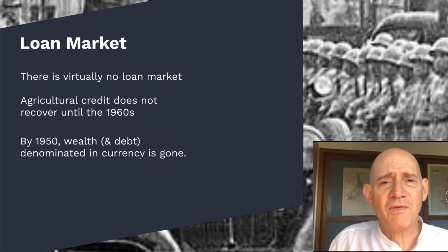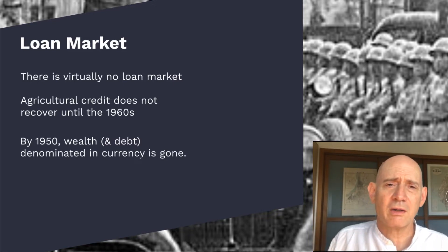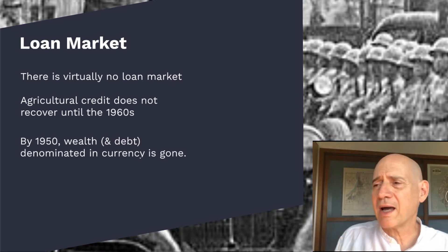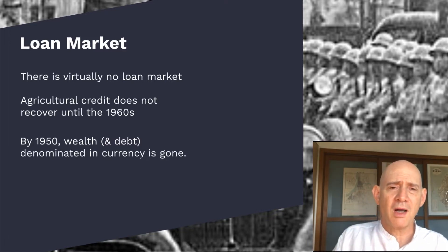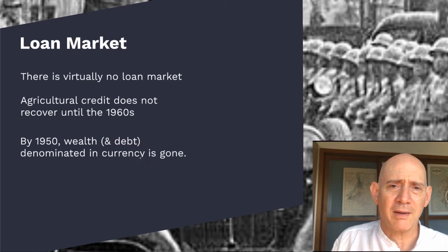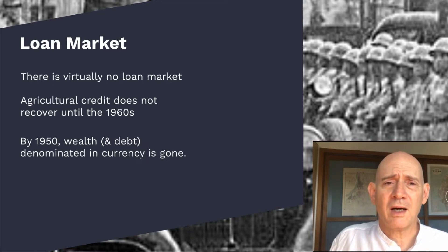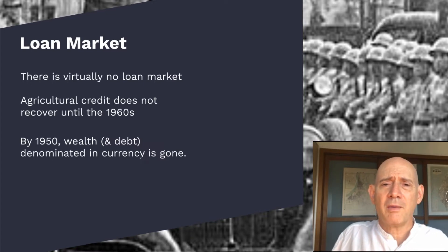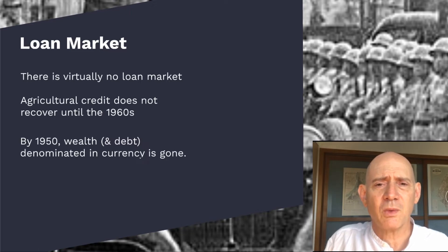When you do find agricultural credit, the interest rates are always off the chart. There's one category listing interest rates of 20% or 25% or more, and virtually all the loans are in that category. Usually there just aren't any loans at all. The loan market is cratered. Farmers have no way to get the capital they need for their farms to function well.